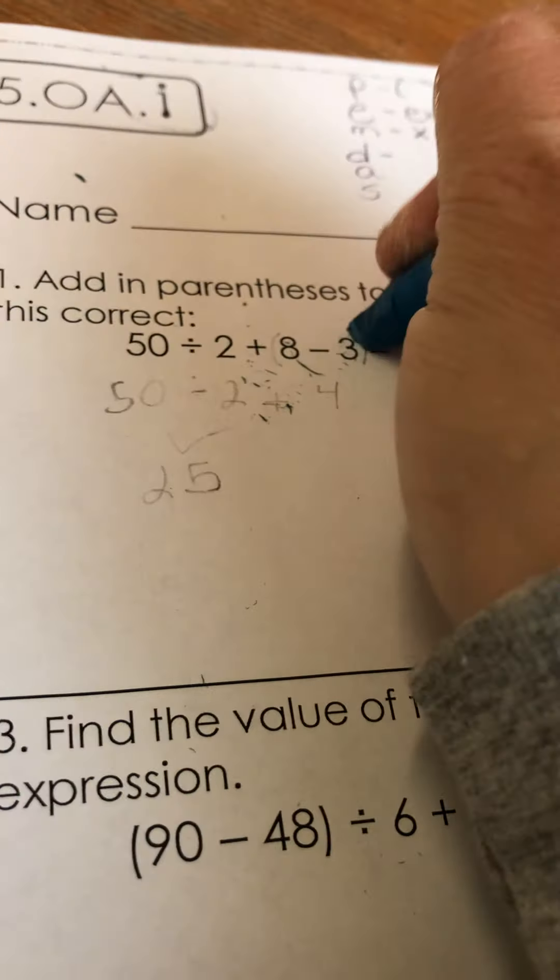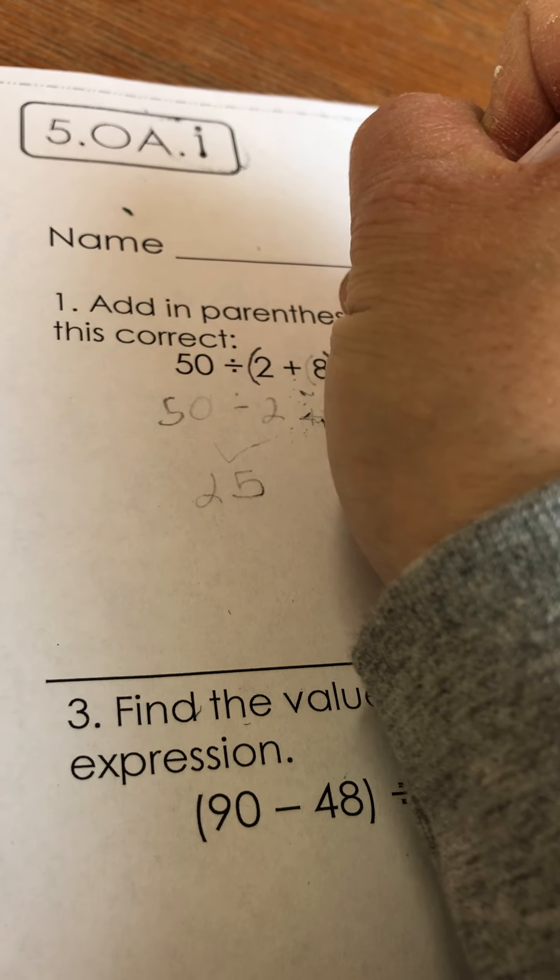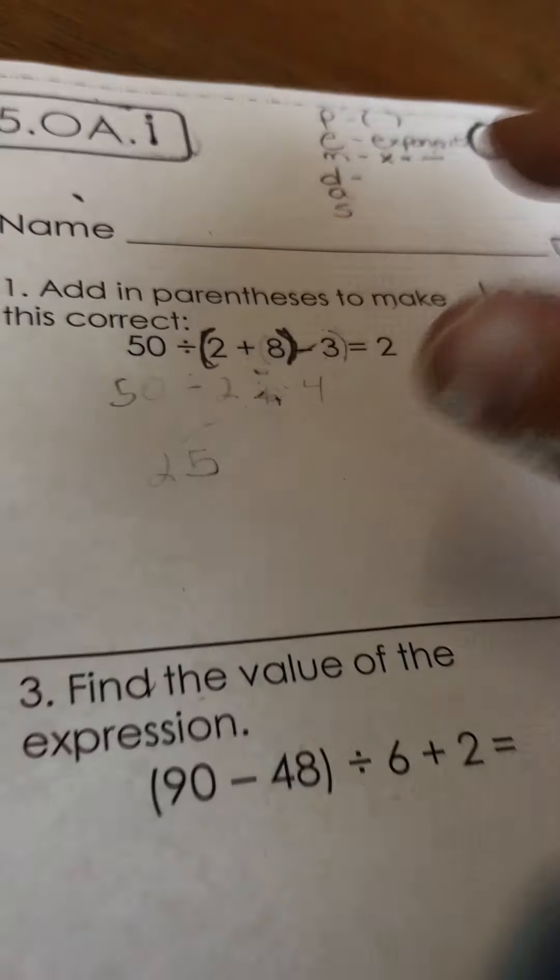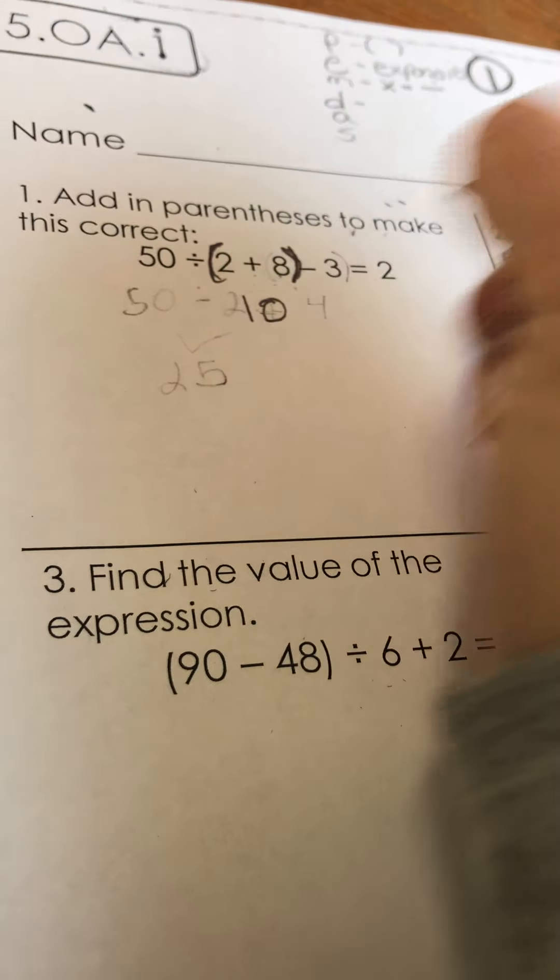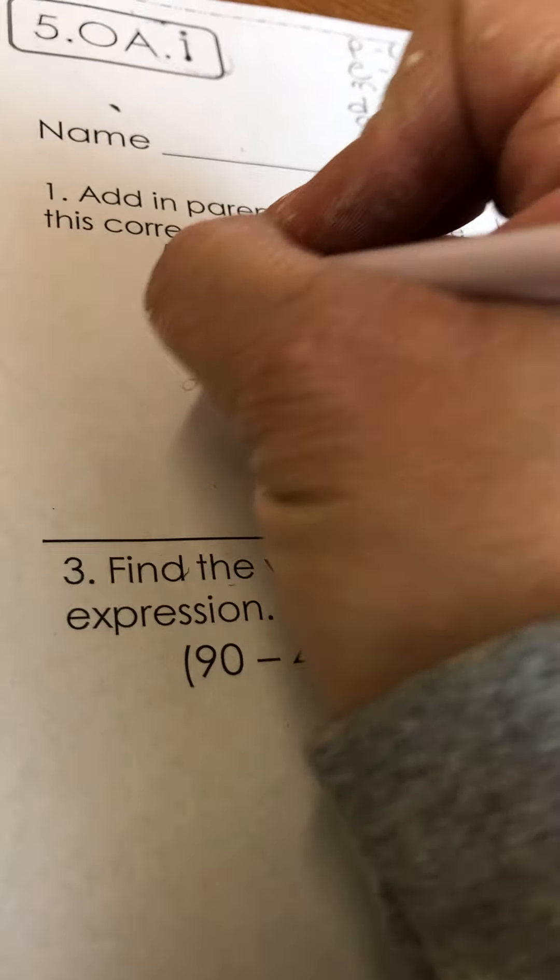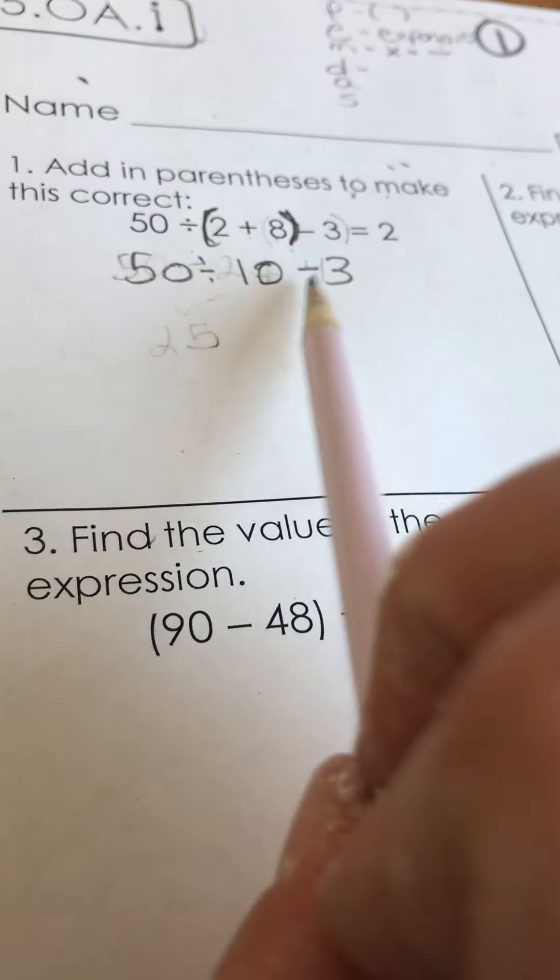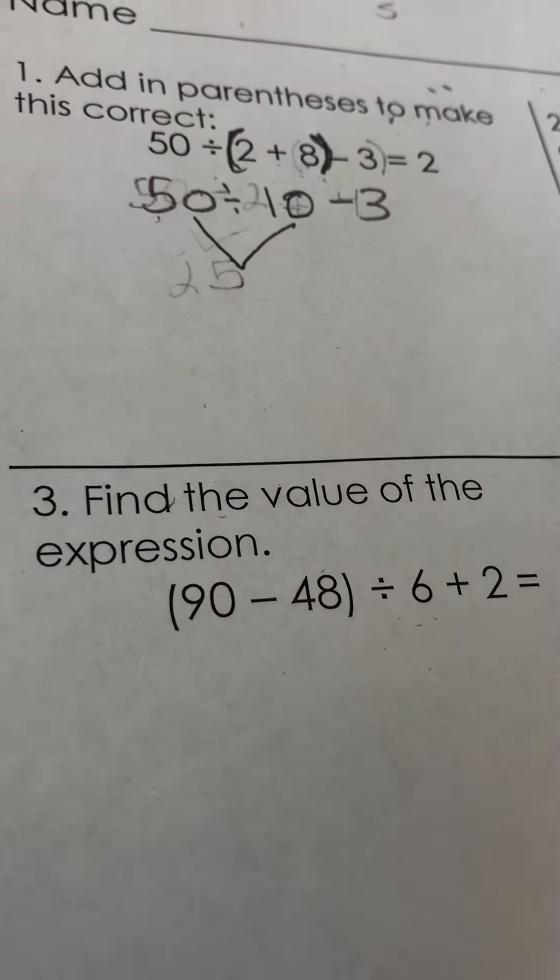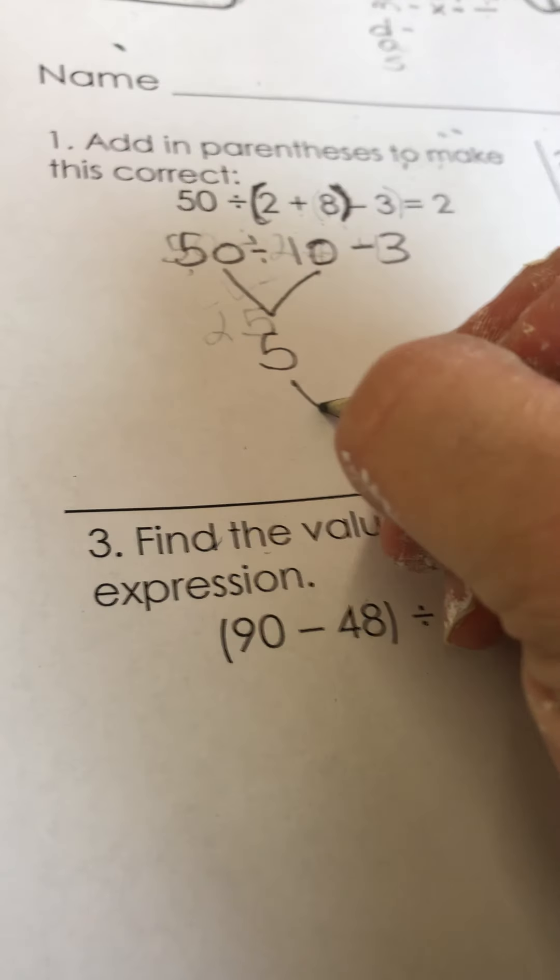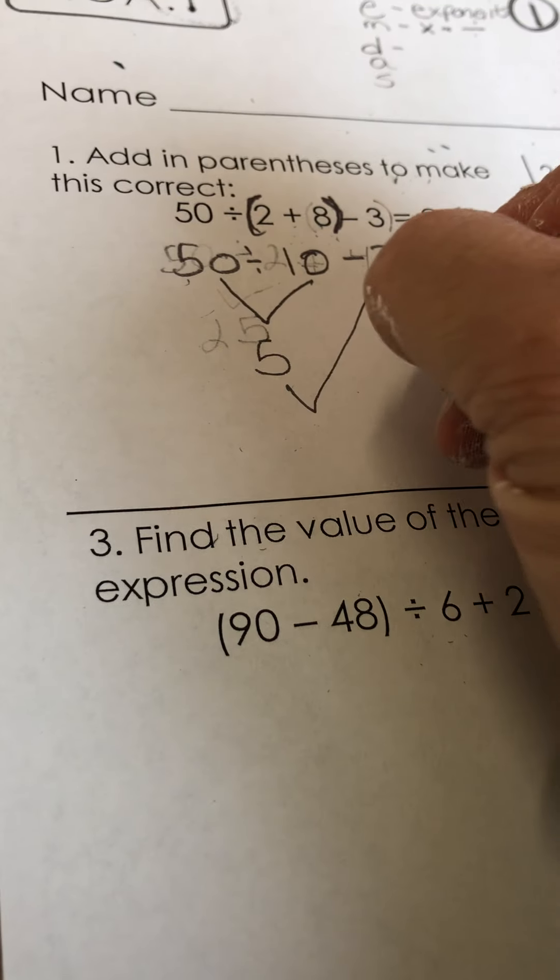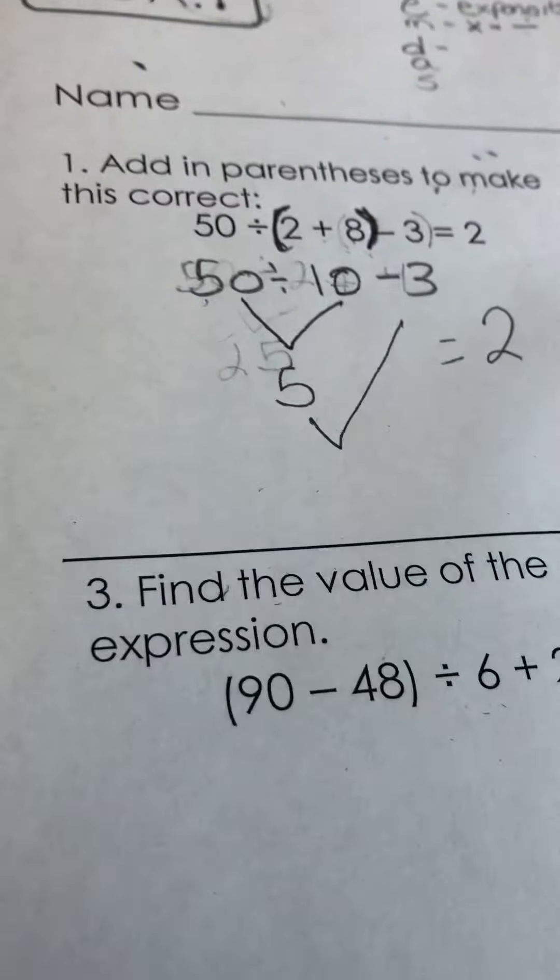Let's try putting our parentheses on the 2 plus 8. So 2 plus 8 is 10, and then I'm going to write everything else that I have left. Okay, so now I would divide first. I have 50 divided by 10 which equals 5 minus 3. Look at that, we get 2. 5 minus 3. So my parentheses go on the 2 plus 8.